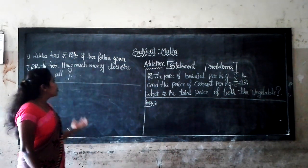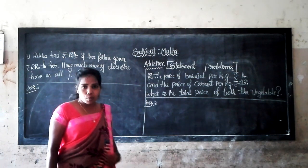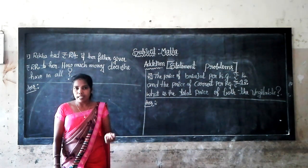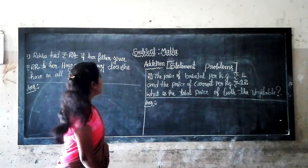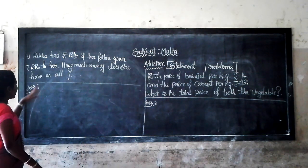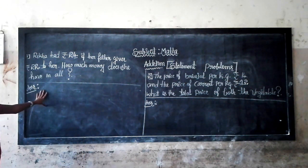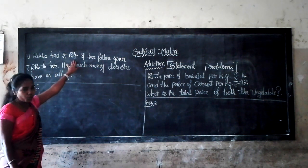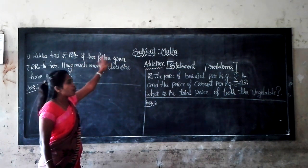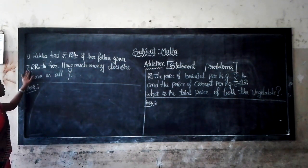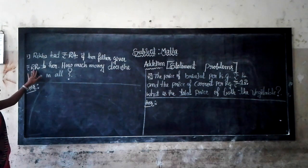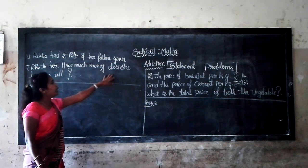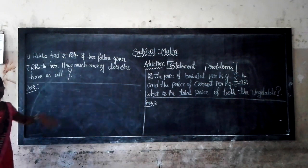Look at the board, DS students. Here I wrote some problems on the blackboard. It is related to our daily life. Look at statement problem 1: Rekha had rupees 24. If her father gives rupees 22 to her, how much money does she have in all?